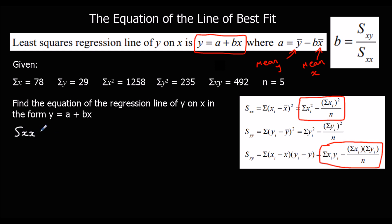So Sxx is the sum of the x squareds — here we've got 1, 2, 5, 8 — minus the sum of the x's squared over n. The sum of the x's is 78, so that's 78 squared over n which is 5. We type that into the calculator and we get 41.2.